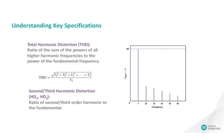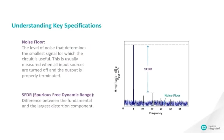Total harmonic distortion, or THD, is defined as the ratio of the sum of the powers of all higher harmonic frequencies to the power of the fundamental frequency. The second and third harmonic distortions are the ratio of the second and third harmonic frequencies, respectively, to the fundamental frequency. The noise floor is the level of noise that determines the smallest signal for which the circuit is useful. This is usually measured when all input sources are turned off and the output is properly terminated. Spurious free dynamic range, or SFDR, is the difference between the fundamental and the next largest frequency component. For frequency domain applications, THD, noise floor, and SFDR are all important specifications to consider because they affect dynamic range and the integrity of the signal.